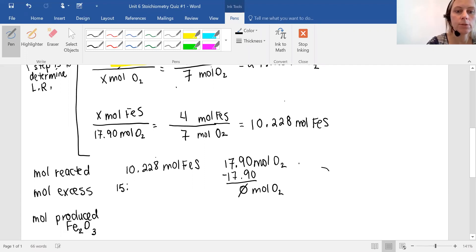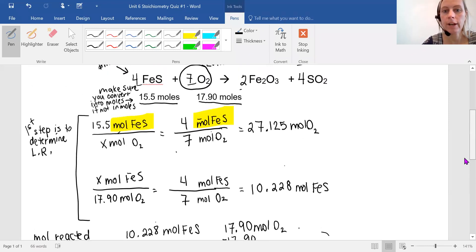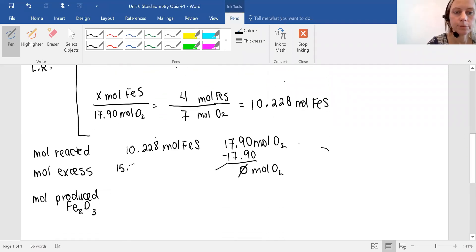So my excess, I'm going to look at my value up here, 15.5, and then subtract my 10.228 moles. And then I get an excess of 5.272. And I'm going to label that. So I know exactly everything's there. So there it is clearly labeled. So far, so good.